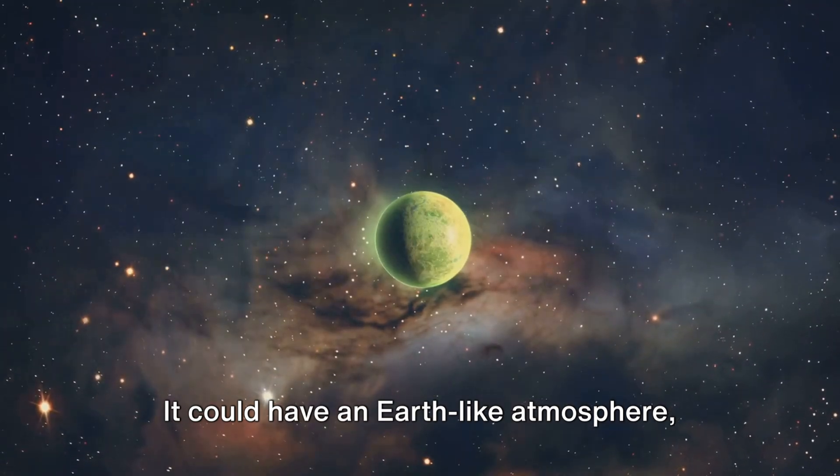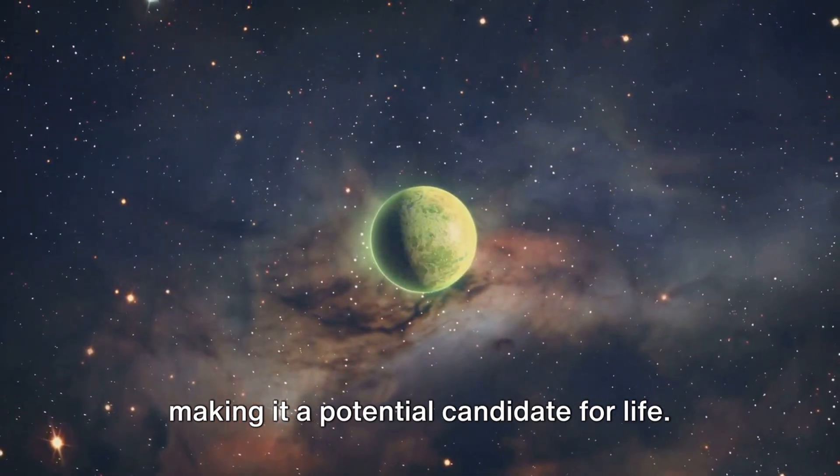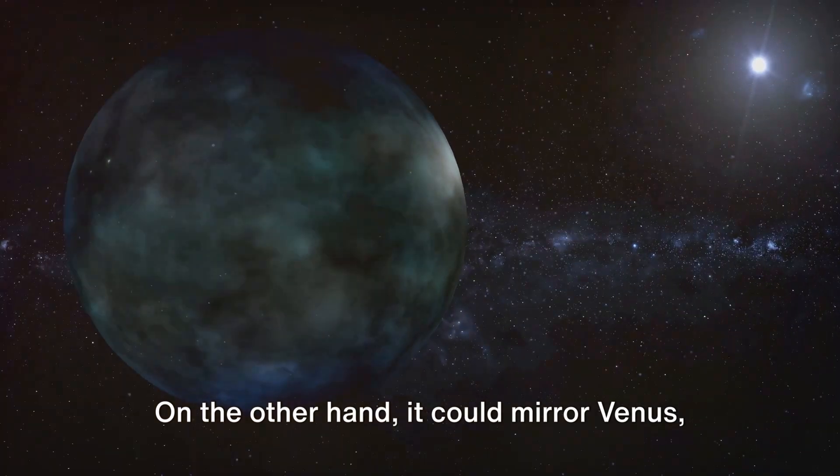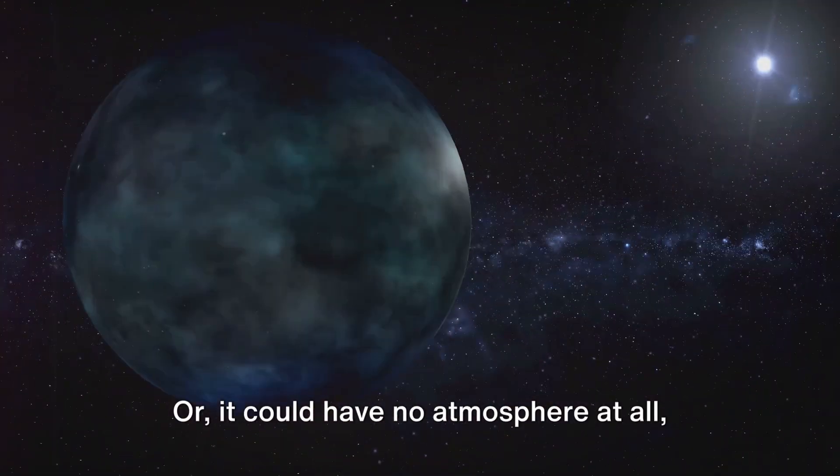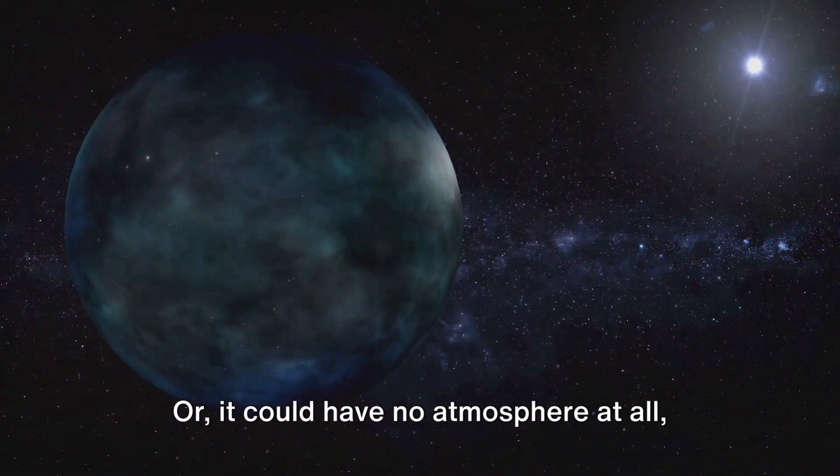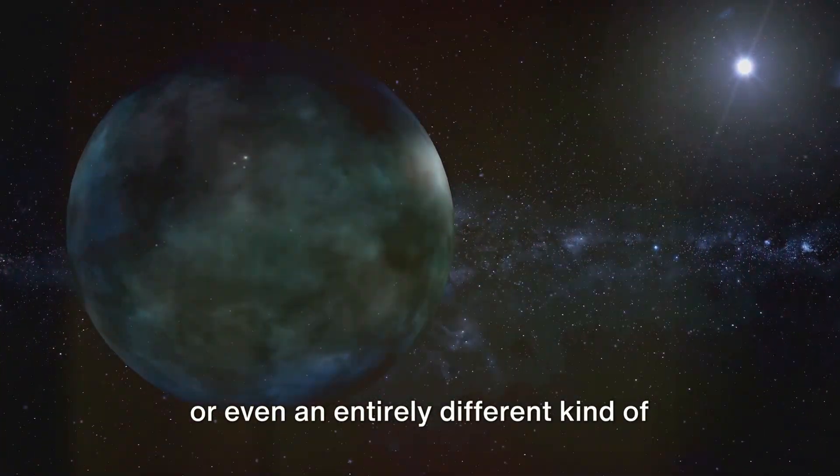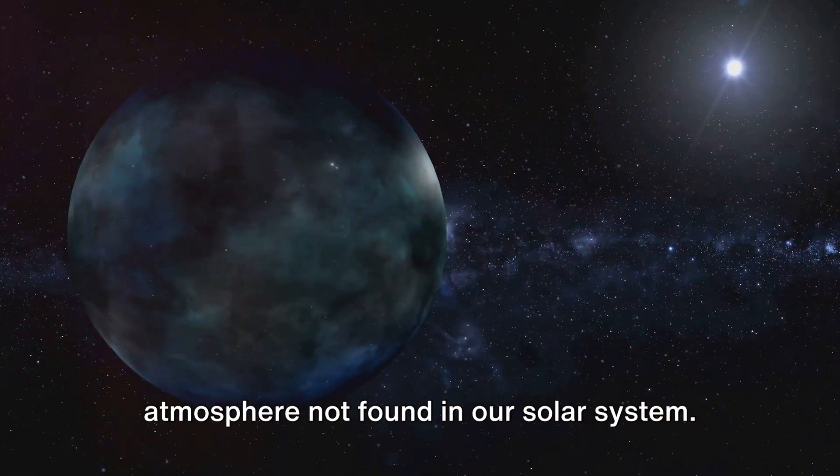It could have an Earth-like atmosphere, making it a potential candidate for life. On the other hand, it could mirror Venus, with a runaway greenhouse effect making it inhospitably hot. Or, it could have no atmosphere at all, or even an entirely different kind of atmosphere not found in our solar system.